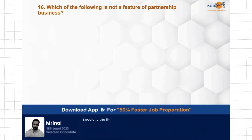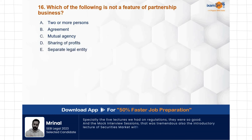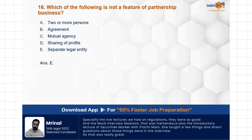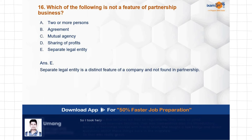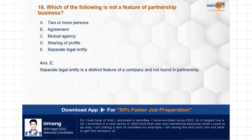Question: Which of the following is not a feature of partnership business? Options: two or more persons, agreement, mutual agency, sharing of profits, separate legal identity. Be careful — they are asking what is not a feature. The correct answer is E — separate legal entity does not exist in a partnership. It is a distinct feature of a company. It exists in a limited liability partnership, but not in a general partnership.